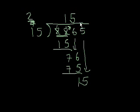15 goes into 15 exactly one time. 1 times 15 is 15. Subtract it. We get a remainder of 0. So 15 goes into 2,265 exactly 151 times.